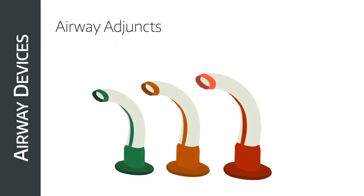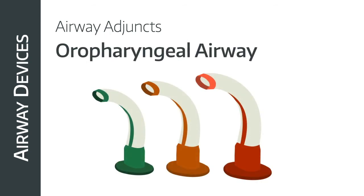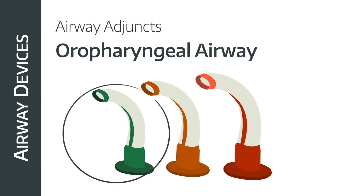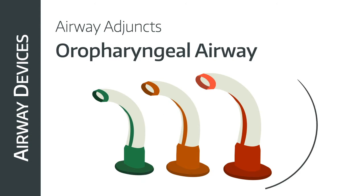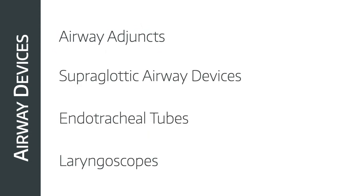Next is the oropharyngeal airway, also known as the Guedel. These are really useful and you'll probably use them loads in your career. They're passed through the mouth into the posterior pharynx to prevent the tongue from covering the epiglottis — really helpful for bag-valve-mask ventilating a patient who keeps obstructing. You size these by measuring from the angle of the mandible to the incisors; top tip is usually green for women, orange for men, and red for large men. Guedels do stimulate a gag reflex, so may not be tolerated well by semi-conscious patients.